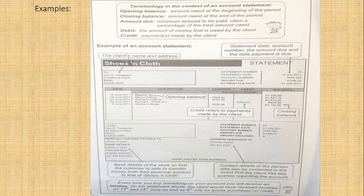Now debit and credit - you know how debit and credit works. Debit is the amount of money that is owed by the client. Credit is the payments made by the client. Remember, on your statement: if you owe money, it becomes a debit - you are the debtor. And if you paid money, that is the credit amount.